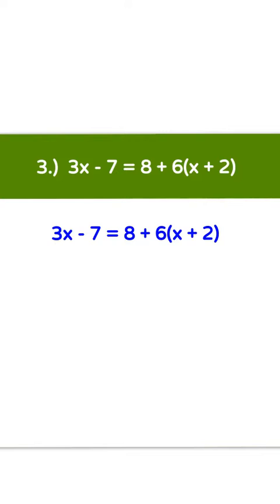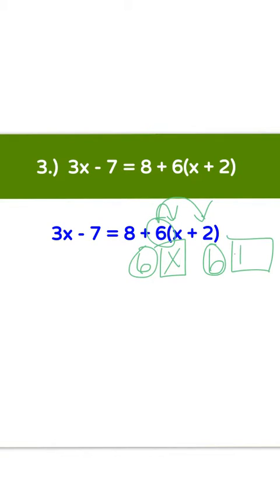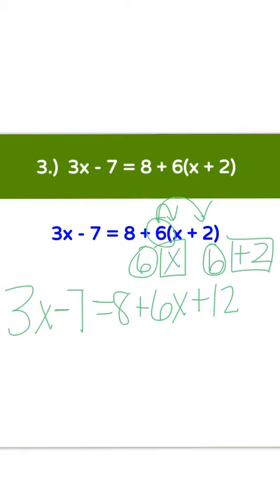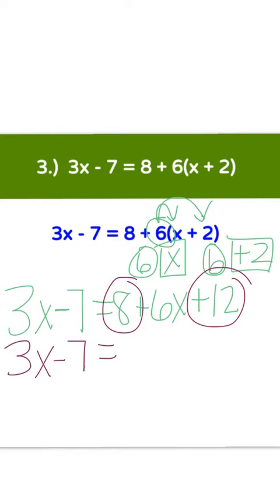Number 3: 3x minus 7 equals 8 plus 6 times the quantity of x plus 2. You do have parentheses, so you will need to distribute. Use the circle-square method and share a positive 6. Positive 6 times x is 6x, and positive 6 times positive 2 is positive 12. Bring down everything else including the 8, giving us 3x minus 7 equals. On the right-hand side, the 8 and positive 12 are constants that can be combined, so we get 6x plus 20.